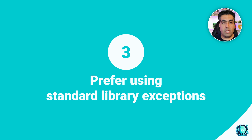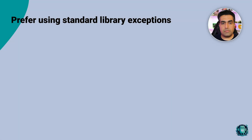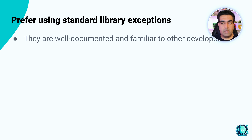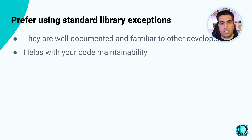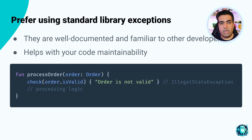Number three: prefer using standard library exceptions. Stick to exceptions provided by the Kotlin standard library for common error cases, like IllegalArgumentException, IllegalStateException, and NullPointerException. They are well documented and familiar to other developers, which helps with code maintainability. For example, use IllegalStateException for method calls that are illegal in a particular state.